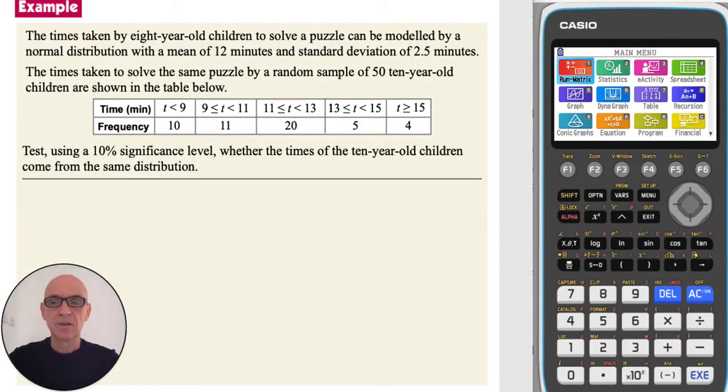In this question, the times taken by eight-year-old children to solve a puzzle can be modelled by a normal distribution with a mean of 12 minutes and a standard deviation of 2.5 minutes, and we're asked to test whether the times of the 10-year-old children come from the same distribution.